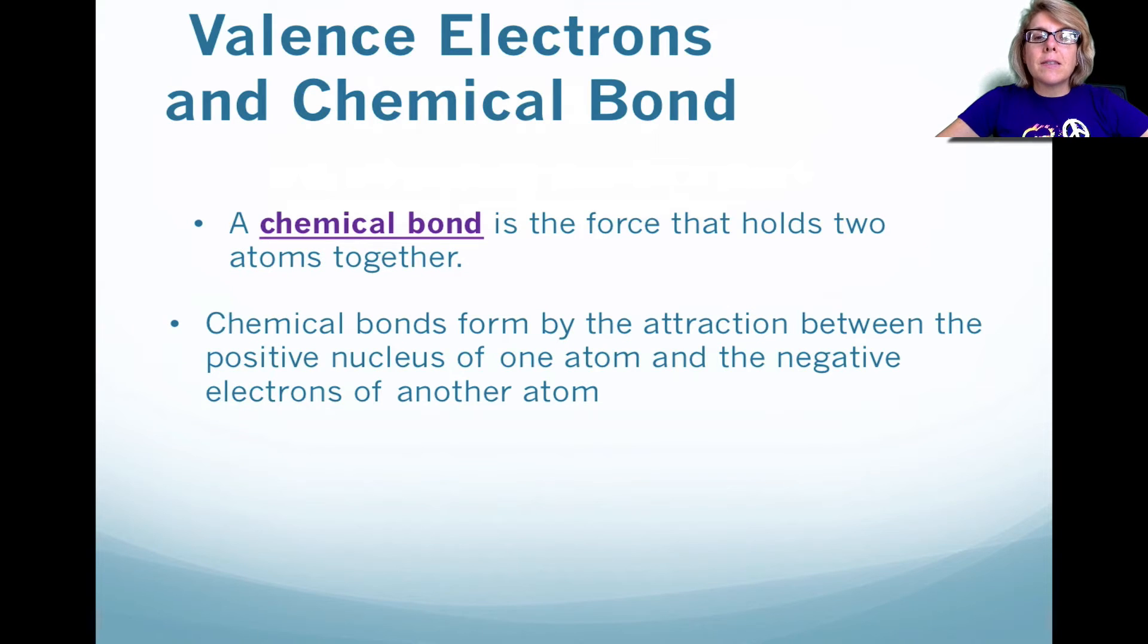Okay, so what is a chemical bond? A chemical bond is a force or an attraction that holds two atoms together. And typically, with a chemical bond, you have the charge of the positive nucleus that is attracted to the negative electrons from the other atom.